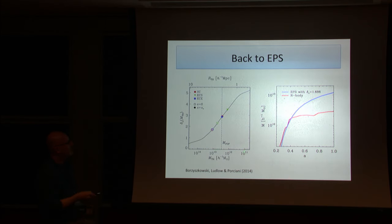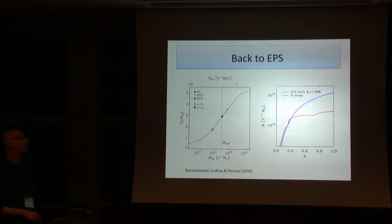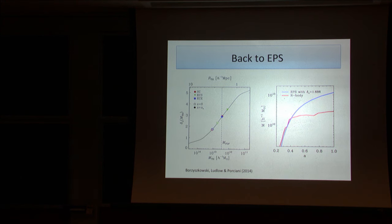Anyway, so if you play the standard Press-Schechter game, in the paper we have five different cosmologies, three different... nothing changes. It always works.